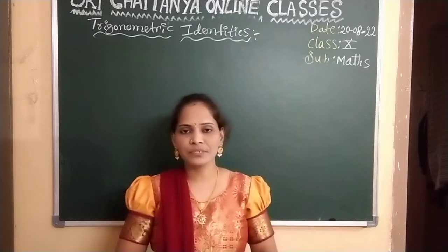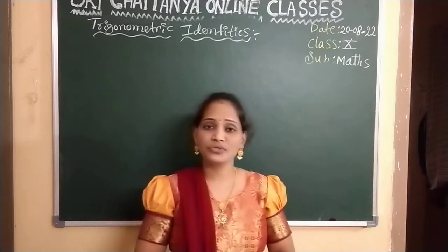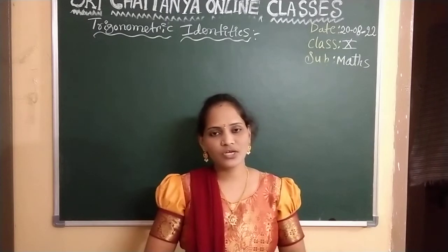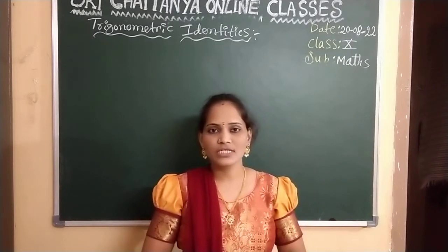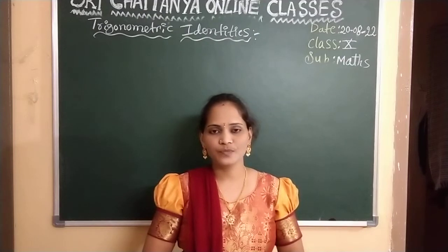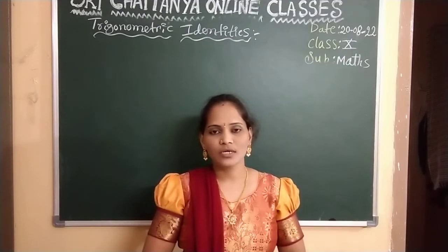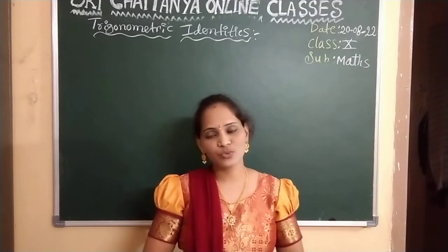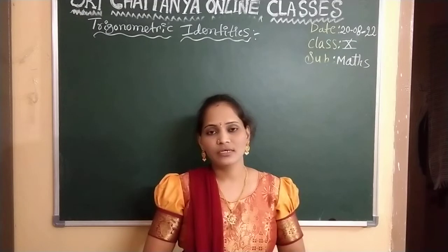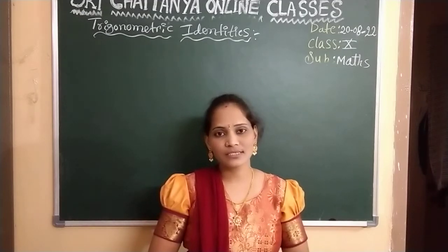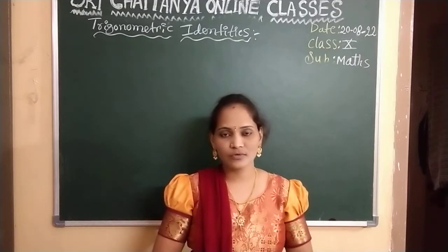Actually, in trigonometry, we have three identities, which are sin square plus cos square is equal to 1, cos square minus cos square is equal to 1, and secant square minus tan square is equal to 1.